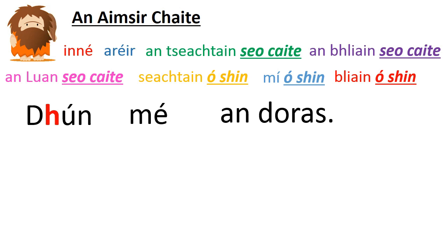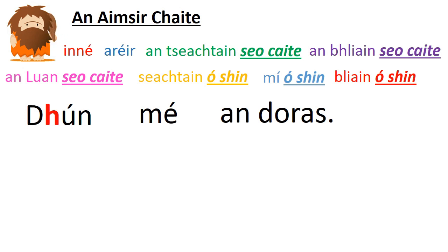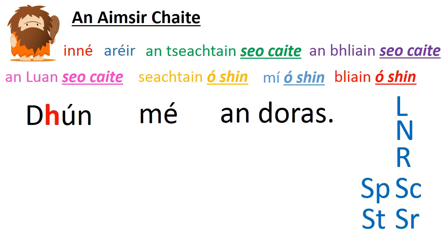Dhún mé an doras. I closed the door. Notice the séimhiú — that's our H — which is very important to tell us that this sentence is in the past tense. Let's remind ourselves of what happens with séimhiú in the Aimsir Chaite. You put a séimhiú on a consonant, with the exception of L, N, R, and an S that comes before another consonant.